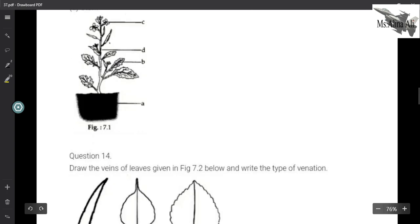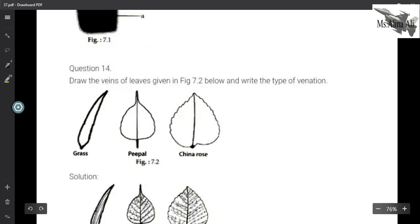Let's move to the next one. Draw the veins of the leaves in the given diagram and write the type of venation. Now first one is grass. Grass - you know which one is parallel venation. So this is venation. How will it be drawn? Peepal and china rose have reticulate venation. There is the center line. So you can draw and write the venation.